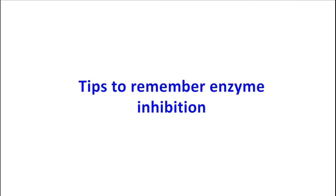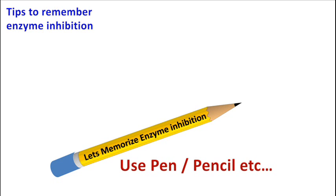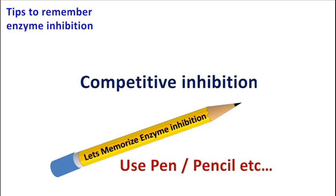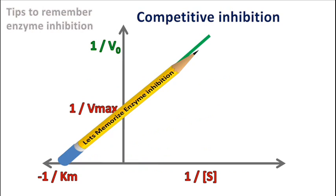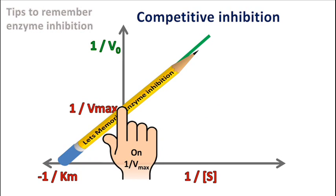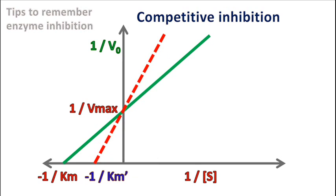To memorize the graphs of each kind of enzyme inhibition, all you need is a pencil or a pen. To memorize the graph of competitive inhibition, place the pencil on the graph and hold it at the 1/Vmax value. Now rotate the pencil in the anti-clockwise direction — this will give the graph of competitive inhibition. In competitive inhibition, the value of -1/KM has changed whereas the value of 1/Vmax remains the same.